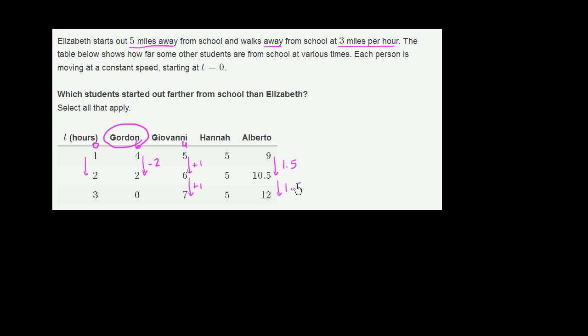So where was he at time equal 0? Well, he would have been a mile and a half closer to school. So 9 minus 1.5 is he would have been 7 and a half miles away.